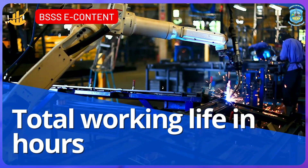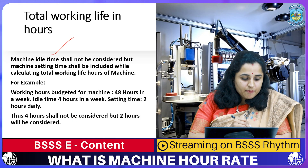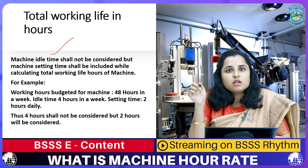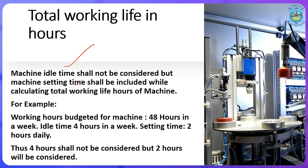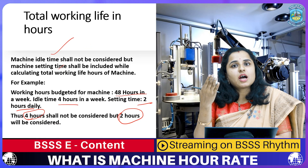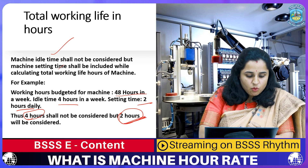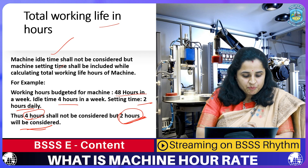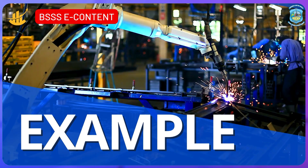When calculating total working hours of a machine, remember two things: machine idle time and machine setting time. Idle time is not considered when calculating total working hours, whereas setting time is added. For example, if total budgeted hours are 48 per week, idle time is 4 hours, and setting time is 2 hours daily — the 4 idle hours are excluded but setting time of 2 × 7 = 14 hours is included.